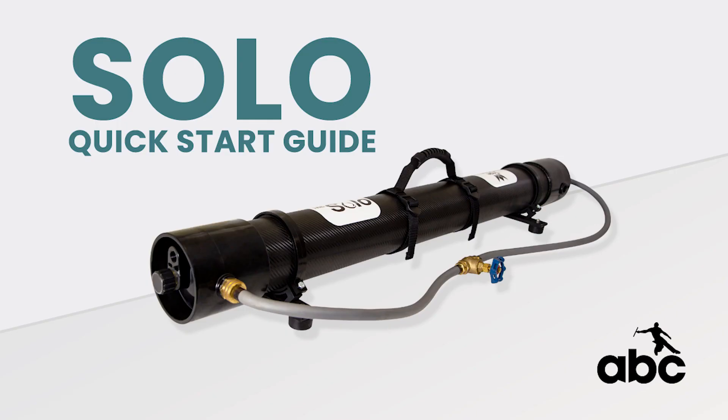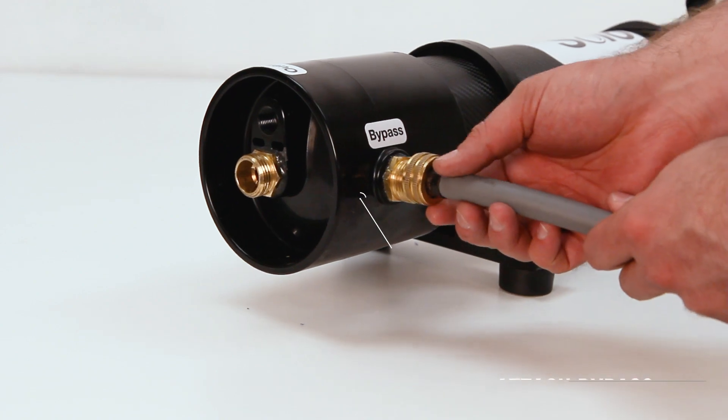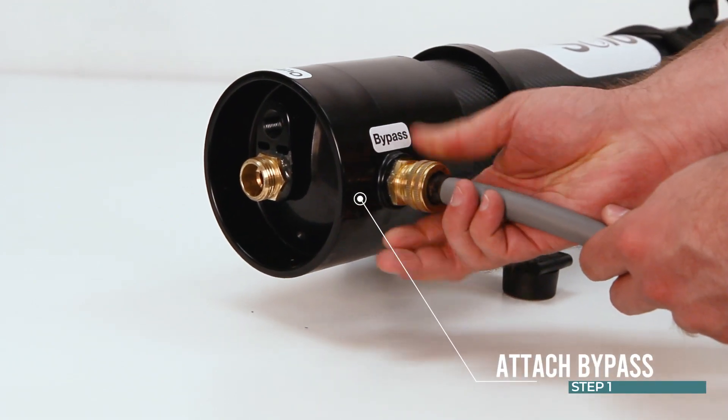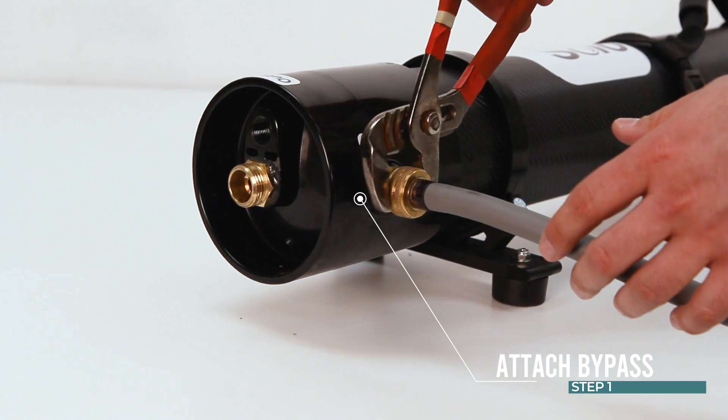Congratulations on the purchase of your Solo water fed system. This quick start video will help you set up your system and start cleaning windows. Step 1: Attach bypass hose to the fitting on the side of the Solo system. Step 2: Open valve on bypass hose fully.